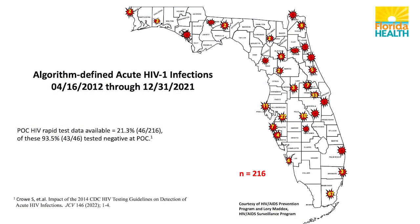This is our early focus on algorithm-identified acute infections, assessing the distribution of these cases. Each little red sunburst represents one algorithm-defined acute case, unless there's a number within it indicating cumulative numbers. Looking across the state, 67 of our 216 algorithm-defined acute cases are in the Miami-Dade area. Central Florida shows Orange County with 33, Hillsborough with 27, and Pinellas with 11 — metropolitan areas ranking in the top 10 for HIV incidence in the US. Our acute cases match the incidence quite well.